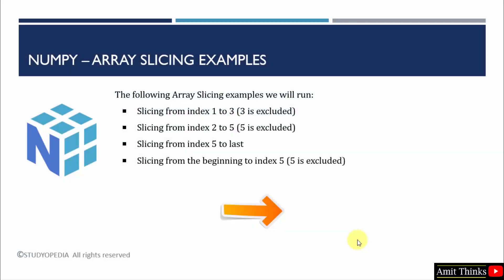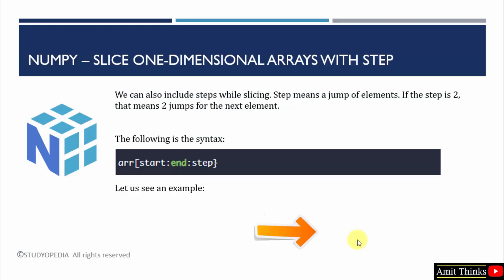In this way we can easily slice arrays in NumPy. We saw the following four examples to slice an array. Now let us see how we can slice a one-dimensional array with step. You can also mention a step with the slicing concept. Slice step means to jump elements — if you mention step as 2, it will jump two values. Here is the updated syntax: we had start and end before, now we also have the step.